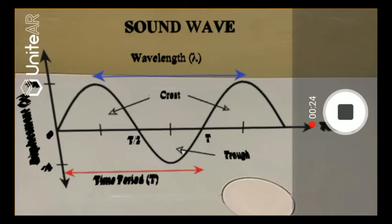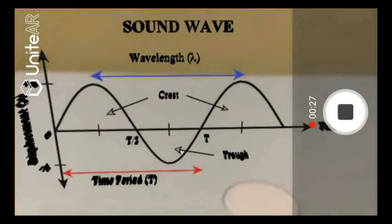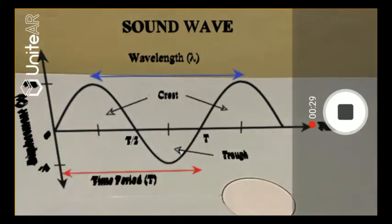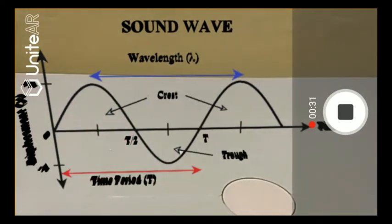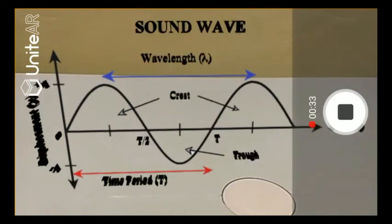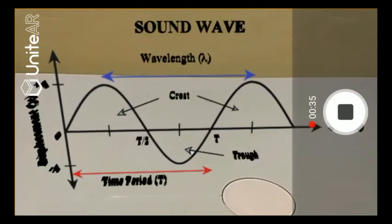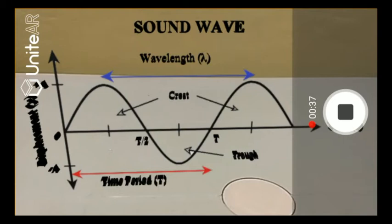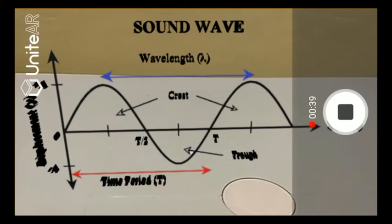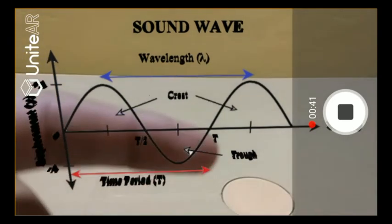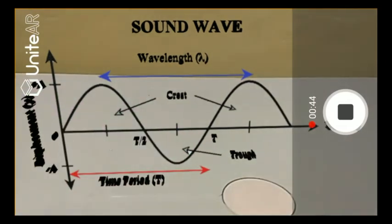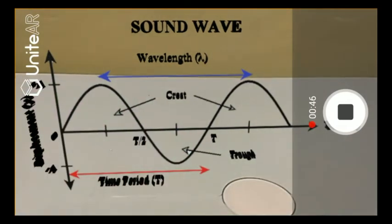The region above the X axis, they are called crests. And the region below the X axis are called troughs. Now let's define the parameters. The first is the time period. So the time period is the time that it takes to complete one oscillation. So right from zero all the way to T. So the time that it takes to complete one oscillation is time period. It's measured in seconds.